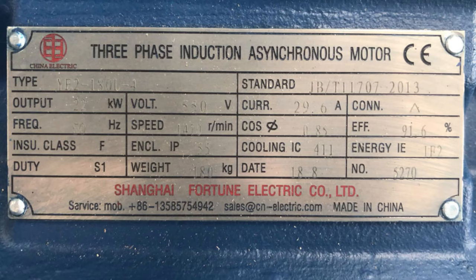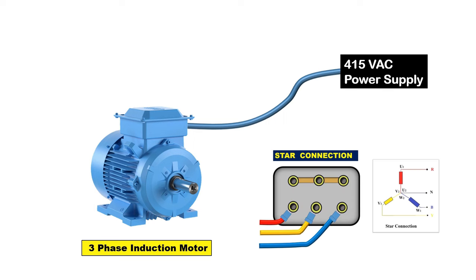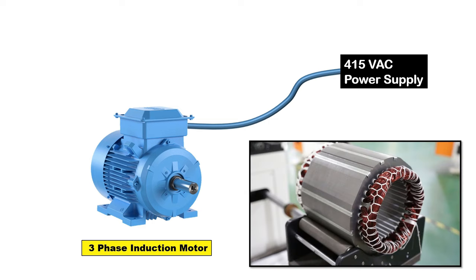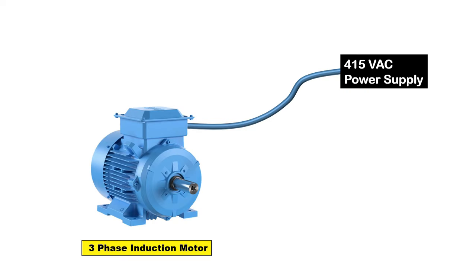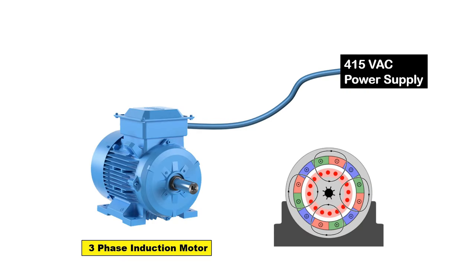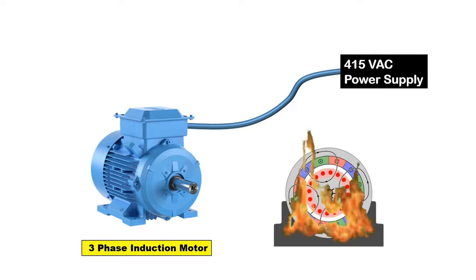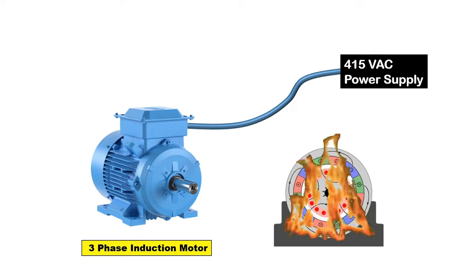Before ending this video, I want to tell you one more thing. If you see the data plate of the motor, then on the data plate, the symbol of star and delta is there. If on the data plate only star symbol is there and it is told you have to connect motor winding in star, then please don't connect motor in delta. Because the insulation of the motor winding is designed according to star connection. If you connect motor winding in delta and high current flows, then insulation of motor will become weak and even your motor may burn out. So be careful about this point.